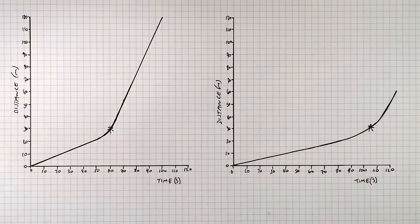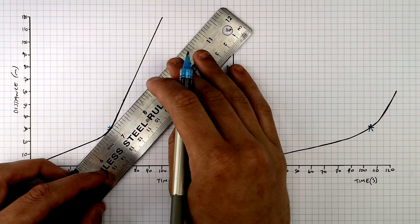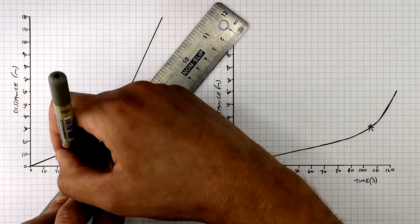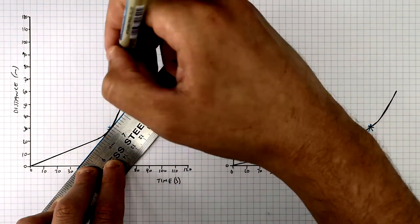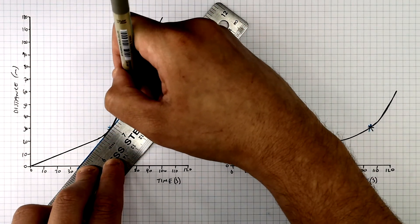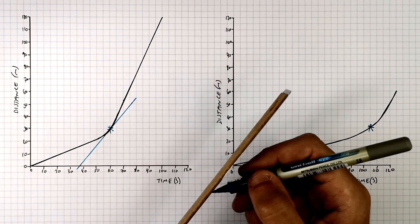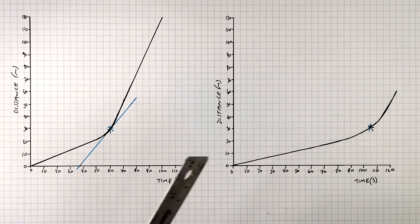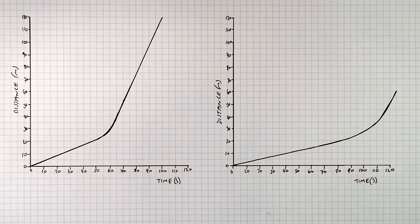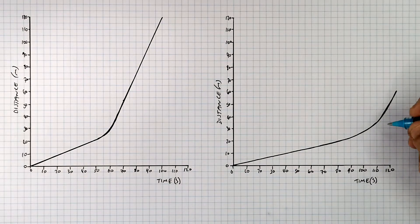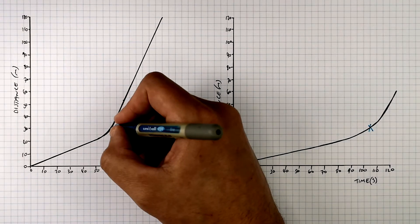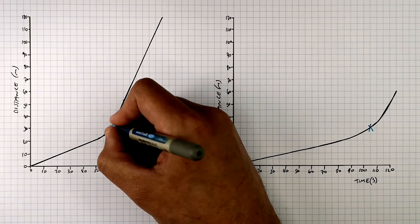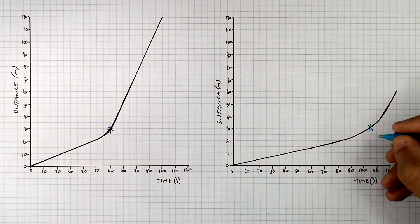If an object is changing speed, which we call accelerating, you can find its speed at a point by finding the gradient of the tangent to the curve at that point. So we're going to now try and find the gradient of the tangent of the curve at 60 seconds, and at 105 seconds on the second graph.